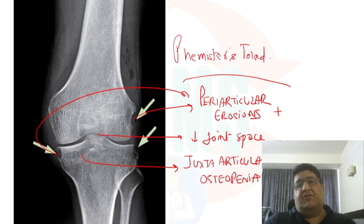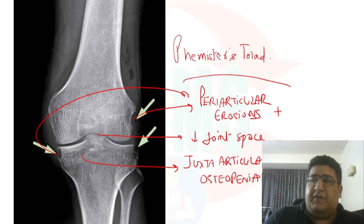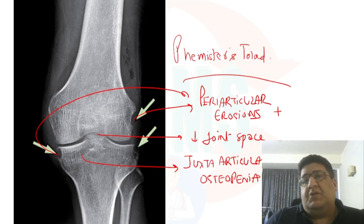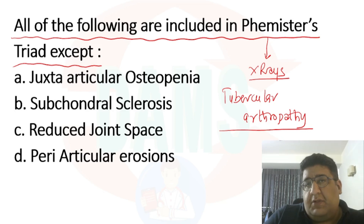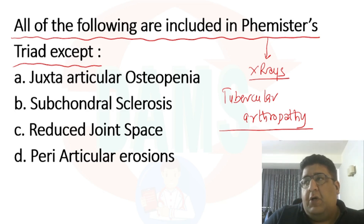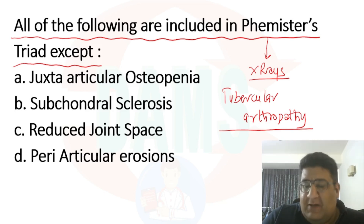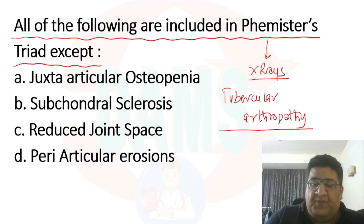When you combine all three things together, you get Phemister's triad, which is a radiological triad for tubercular arthritis of any joint. Although I've given the example of the knee, it can be seen in other joints as well. This is an important overlapping question between orthopedics and radiology.